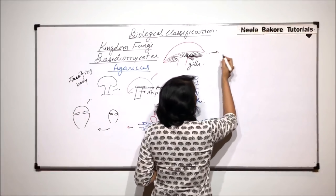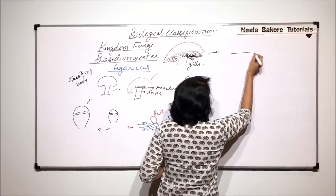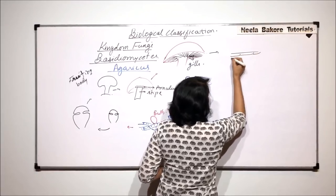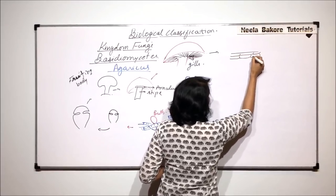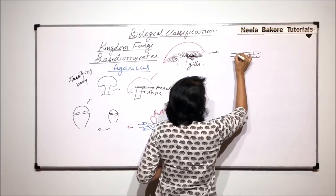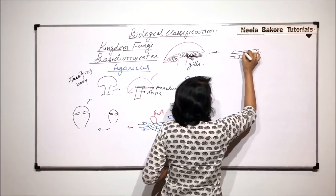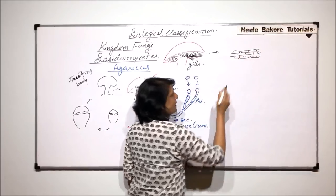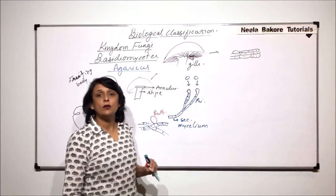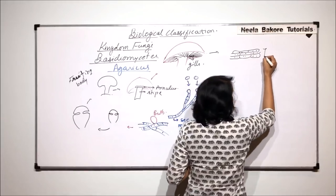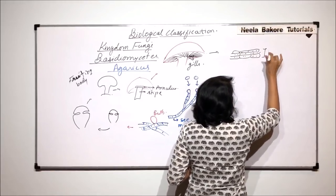If we enlarge one gill, we would find that in the middle there are these dicharyonic hyphae. And these dicharyonic hyphae, they form the sterile part. That means this middle part is not going to reproduce. This part is known as the tremor.